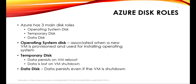Azure managed disks have three main disk roles. The first is the Operating System disk, which is associated when a new VM is provisioned and is used for installing the operating system. The second is the Temporary disk. The third is the Data disk. The OS disk performs the role required for installing the operating system.